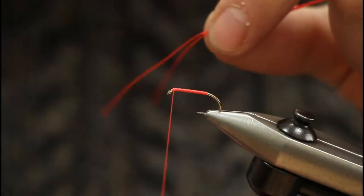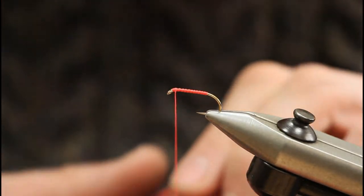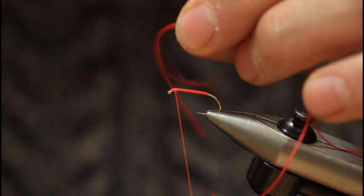On the size 10 version, it has two flexi-floss legs, front and back. I'll tie these in at the front to begin with.